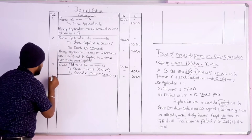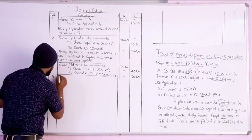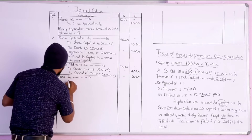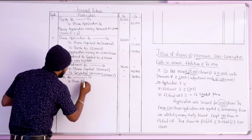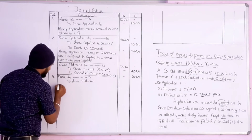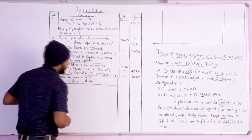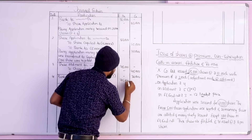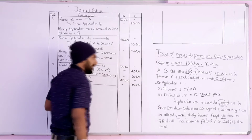Narration: allotment money due on 15,000 shares at 5 rupees each including premium. Next entry for allotment money received: Bank account debit, to share allotment account credit. Amount is 75,000 rupees. Narration: allotment money received.